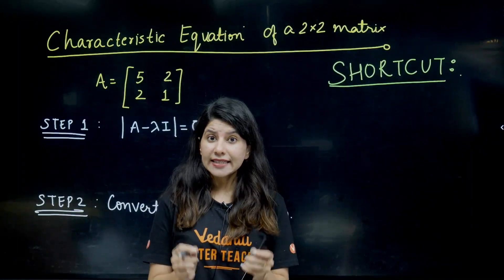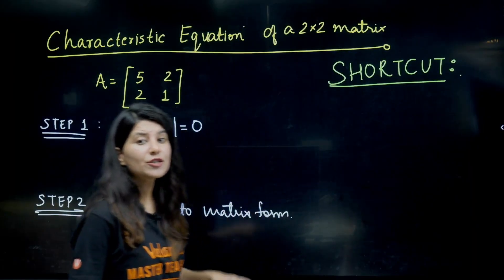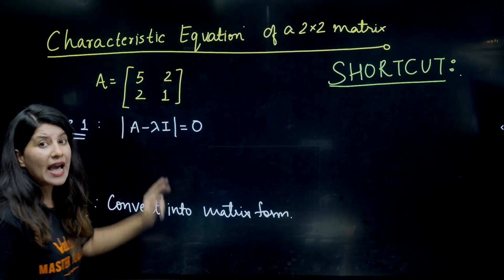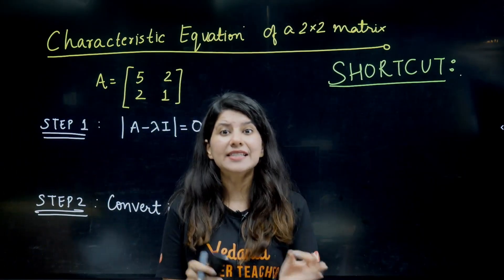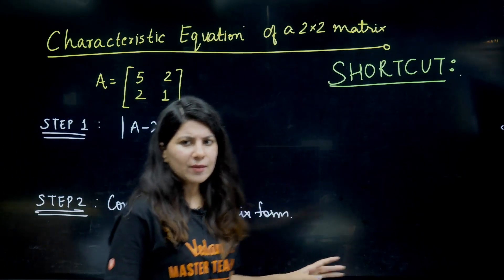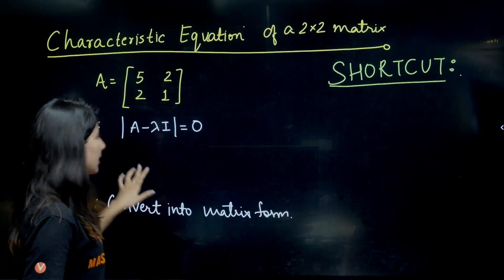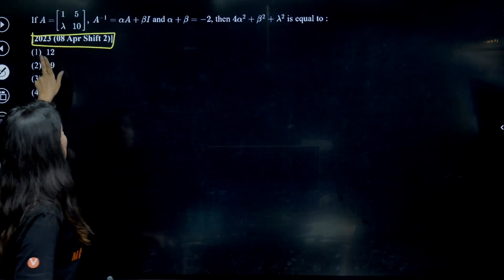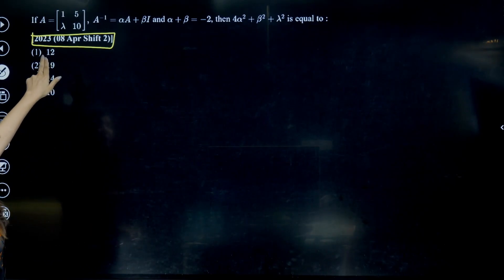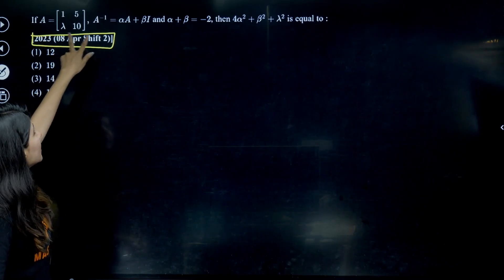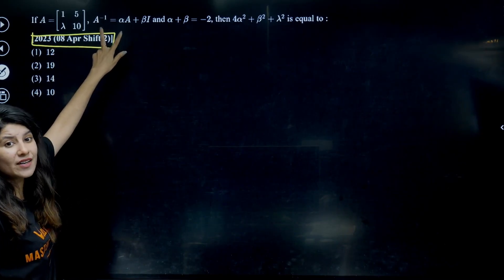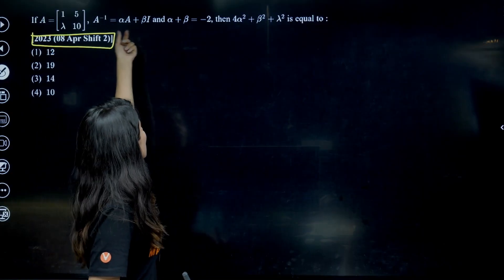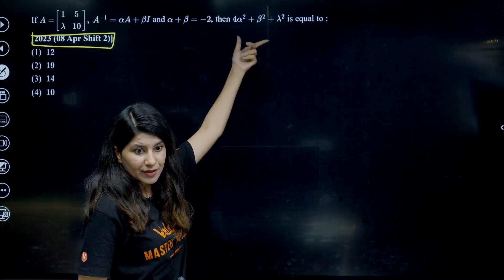Since the past few years, NTA has been asking questions from this topic where a 2×2 matrix is involved and you have to write a matrix equation of order 2. Let me show you the question NTA is asking. This question was asked in JEE Main 2023 — a 2×2 matrix is given along with an equation, and you have to figure out the constants related to that equation.